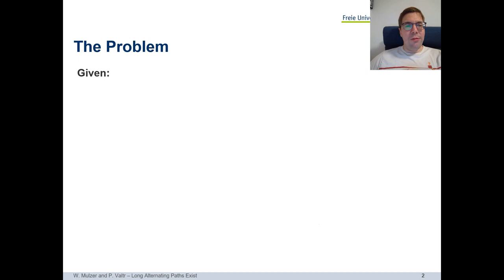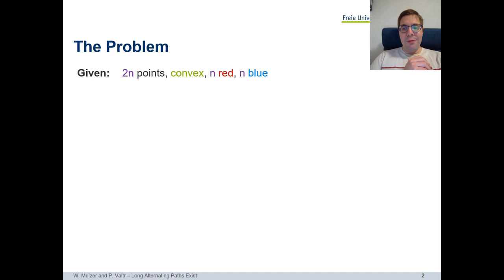Let me explain what the problem is, what is an alternating path, and what is a long alternating path. We are given in this problem two n endpoints in the plane. They are in convex position, and exactly half of these endpoints are red and the other half are blue.